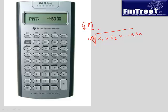Let's understand the practical application of geometric mean. Say you invested money: first year you received a return of 10%, second year 20%. How much on average have you earned over the two years? If you take arithmetic mean, the answer is 15% — but this is incorrect.